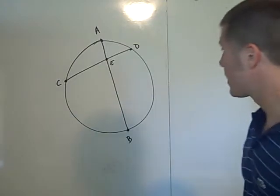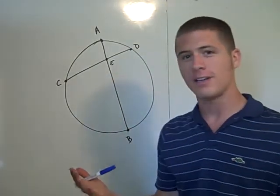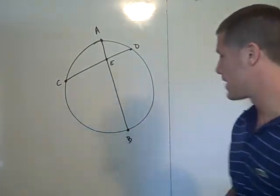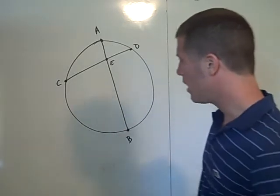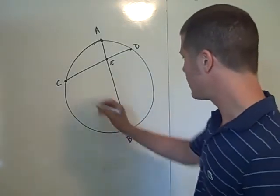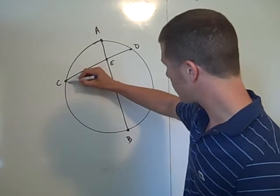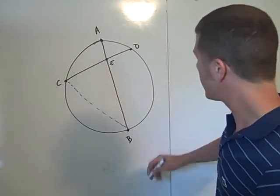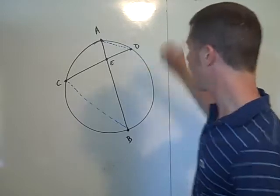so again, when you're running a proof in geometry, it's about drawing the correct auxiliary lines. So the auxiliary lines you want to consider are the segment CB and the segment AD.